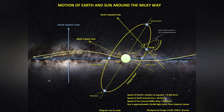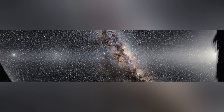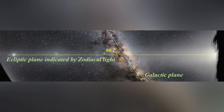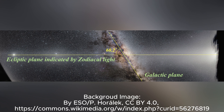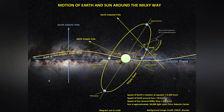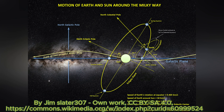Interestingly, the ecliptic plane and the galactic plane are not aligned. They are tilted relative to each other, creating an angle of approximately 60 degrees. This misalignment has implications for celestial observations and astronomical phenomena, affecting the positions of stars, planets, and other celestial objects as seen from Earth.